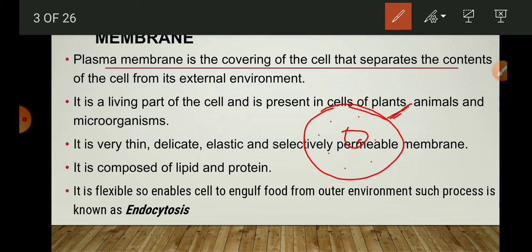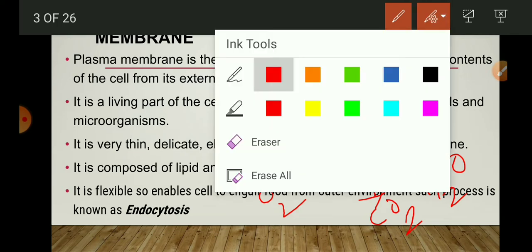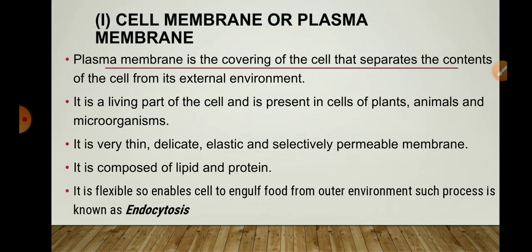The plasma membrane is selectively permeable — it allows selected substances such as oxygen to move inside the cell, carbon dioxide to move out of the cell, and water and glucose molecules to enter the cell. But it will not allow cell organelles or cytoplasm to come out of the cell. It permits entry and exit of some materials. It is composed of lipids and proteins, and because it is flexible, it enables the cell to engulf food.